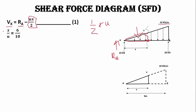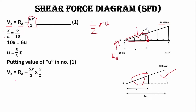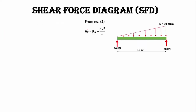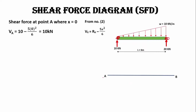By equating the two similar triangles we get x divided by u equals 6 divided by 10, giving u = 5x/3. Substituting this into the shear force equation gives: Vx = RA − 5x²/6. To find the shear force at point A, we put x = 0 into this equation, giving a shear force of 10 kilonewtons at A.